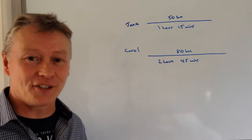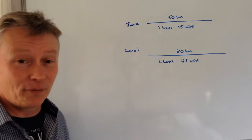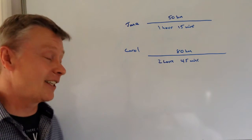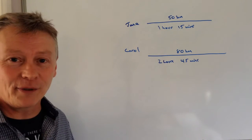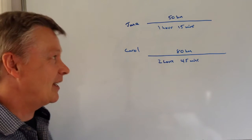I will put the full question in the description below. However, it deals with Jane and Carol. They're both travelling a distance. One is 50 kilometres in 1 hour and 15 minutes, one is 80 kilometres in 2 hours and 45 minutes. And the question asks which one is the slowest—in other words, which is the slowest speed?